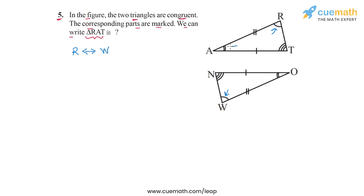Then we see that angle A is marked equal to angle O. So we can say that the vertex A corresponds to the vertex O. And then we see that angle T has been marked equal to angle N. So vertex T corresponds to vertex N.